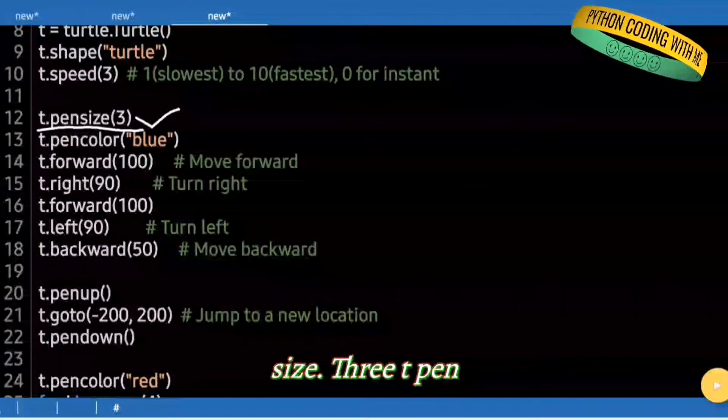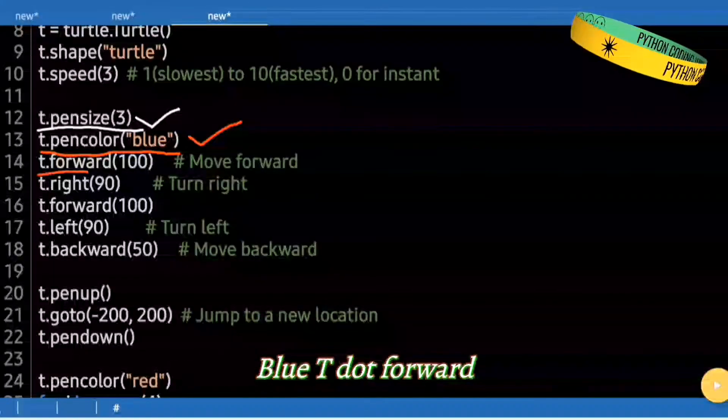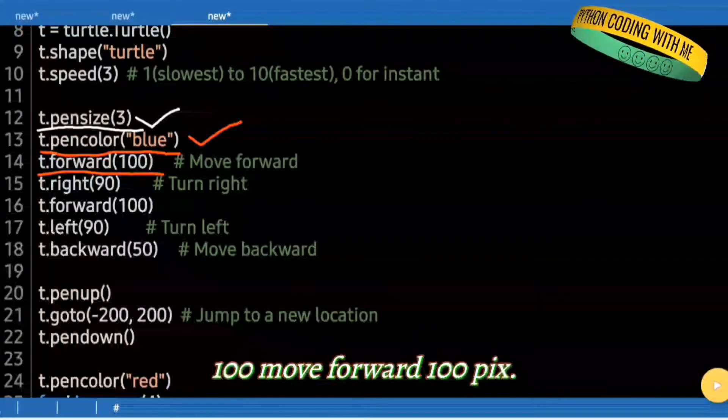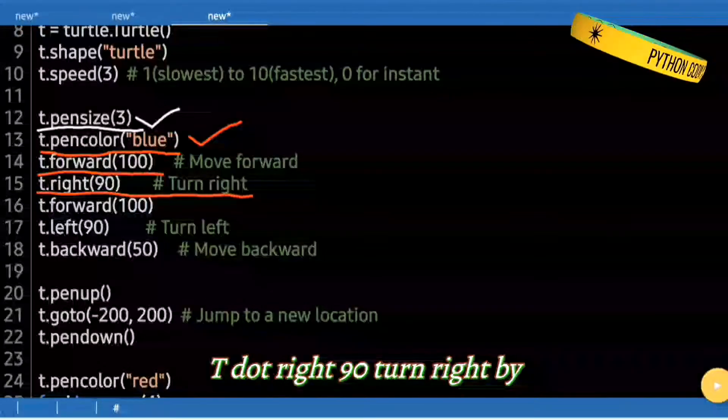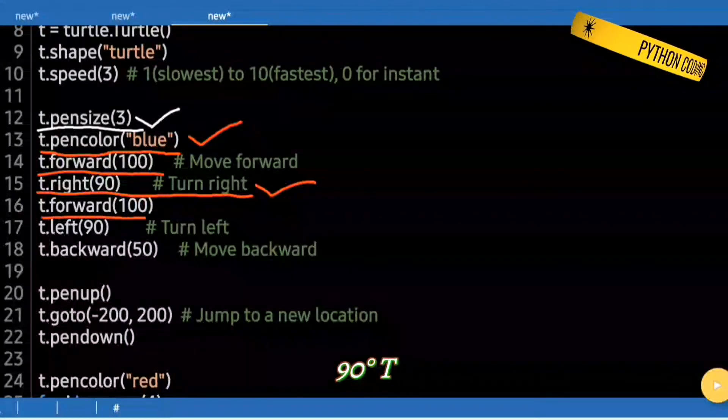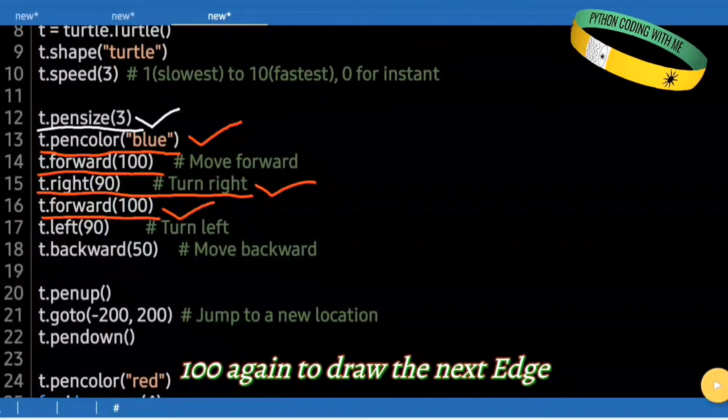t.pensize(3). We make the pen thicker, size 3. t.pencolor("blue"). We set the pen color to blue. t.forward(100). Move forward 100 pixels. t.right(90). Turn right by 90 degrees. t.forward(100). Forward 100 again to draw the next edge.